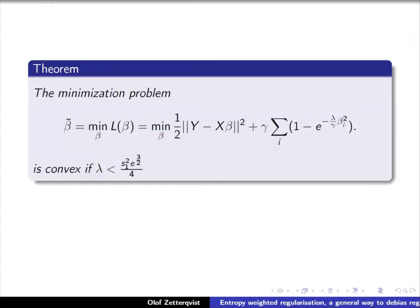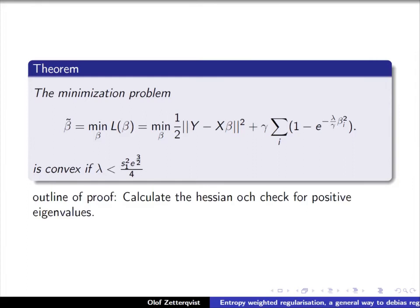The fourth theorem addresses convexity for entropy-weighted ridge: the minimization is convex when lambda is smaller than a constant times s1-squared, the smallest eigenvalue of X-transpose-X. Notably, this condition does not depend on gamma. The proof is straightforward: compute the Hessian and verify positive eigenvalues, with no need to split into subdomains since everything is differentiable.